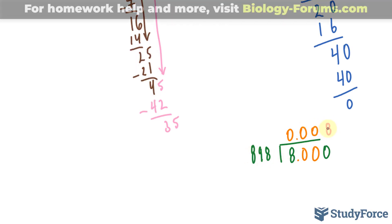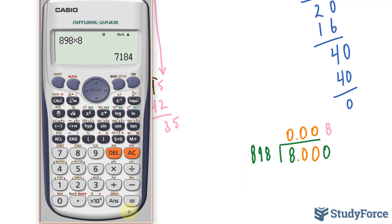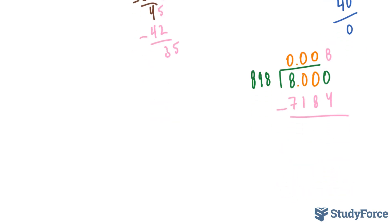This fits 8 times into 8,000. 8 times 898 gives us 7,184. Let's subtract. If we subtract these two numbers, we have, let's borrow a 1 from here. This becomes a 7, this becomes a 10, and then it becomes a 9.